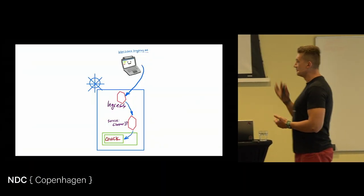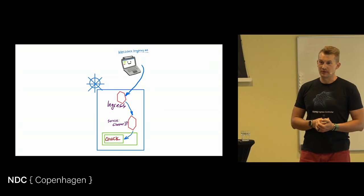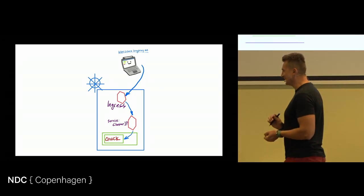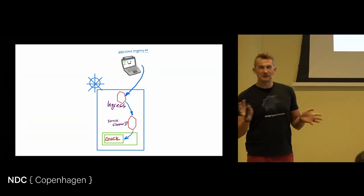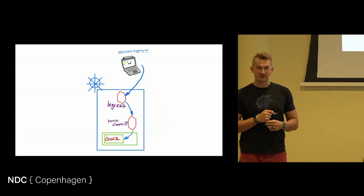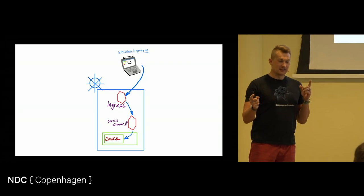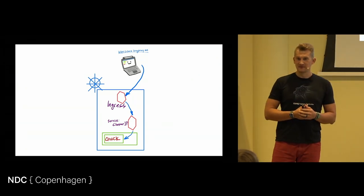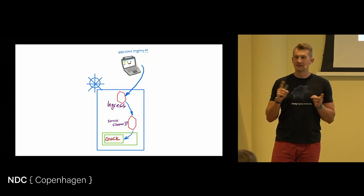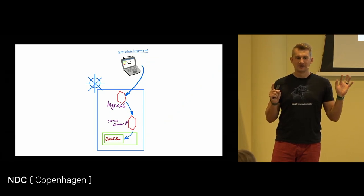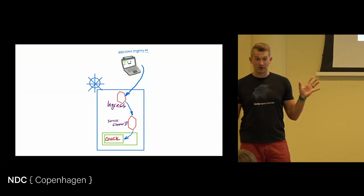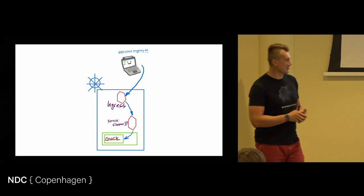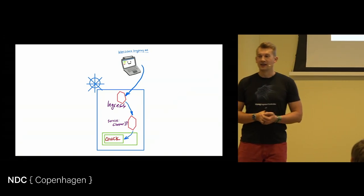Today we're going to be talking about one simple thing called Kubernetes Ingress. How many of you are actually using Kubernetes today? So not even many people using Kubernetes in Denmark. How many of those people use Kubernetes in production? Good stuff. Do you have any services you expose to outside? What are you using for your ingress? Everyone is using HAProxy? Nginx, anyone? Traefik? How many of you have heard about Kong at all? A few people heard about Kong. Today you will learn more about Kong and hopefully get the chance to try it.